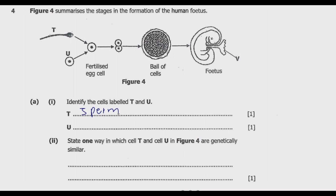If T is the sperm, then U should be the ovum. U is the ovum, which is the female reproductive gamete. The function of the ovum, or female reproductive cell, is to carry the set of chromosomes contributed by the female gamete. That's the key function of the ovum — important points you need to know.